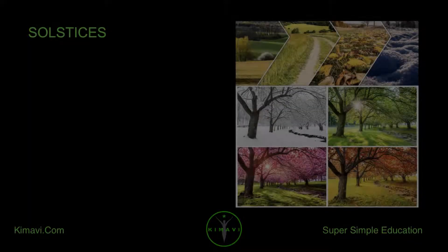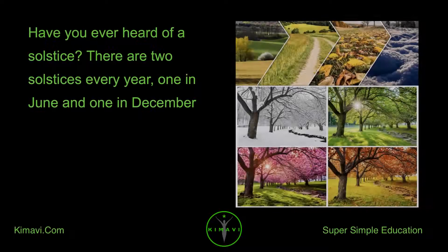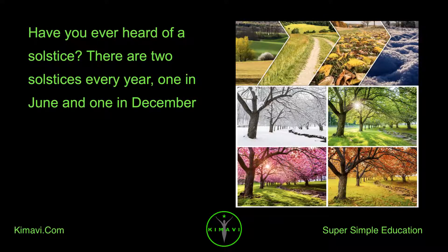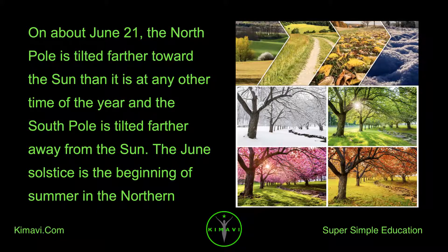Solstices. Have you ever heard of a solstice? There are two solstices every year, one in June and one in December. On about June 21, the North Pole is tilted farther toward the Sun than it is at any other time of the year and the South Pole is tilted farther away from the Sun.